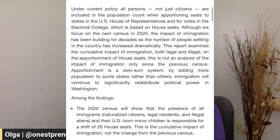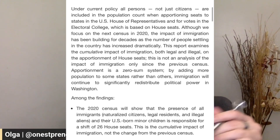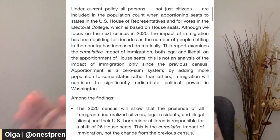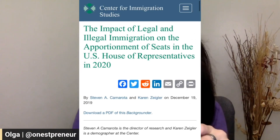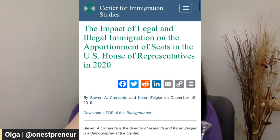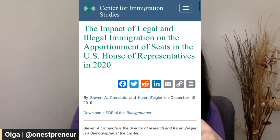Immigrants also have U.S.-born children. Under current policy, all persons — not just citizens — are included in the population count when apportioning seats to states in the U.S. House of Representatives and for votes in the Electoral College, which is based on house seats. So it does confirm what was stated: illegals or immigrants altogether do still affect the number of seats a particular state gets in the House of Representatives. This information can be found at the Center for Immigration Studies, which evaluated the impact of immigration on the census and how it affects the House of Representatives.